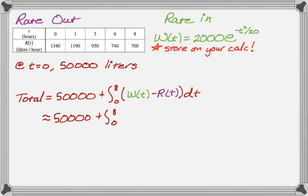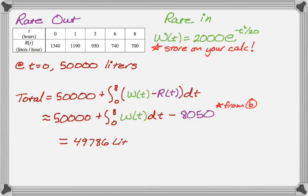Here's where the answer to part B comes in. So it's going to be 50,000 plus, I'm breaking this into two integrals. So it's w(t) from 0 to 8 minus r(t) from 0 to 8. But r(t), we already estimated in the previous part to be 8050. So we got that from part B. And now it's totally a calculator thing. I used my calculator, and it told me to the nearest liter, 49,786. So they lost a little bit. And that'll be in liters.